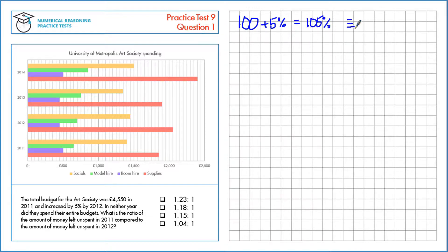As a multiplier, that's 1.05. So we need to increase the budget here of £4,550 by 1.05. We do that by multiplying, which gives us a total of £4,777.50 in 2012.